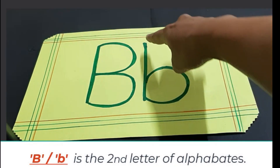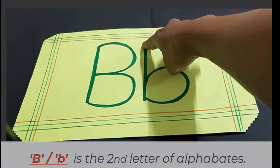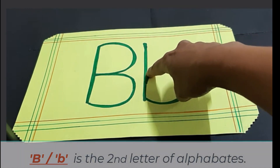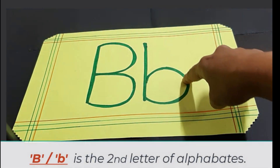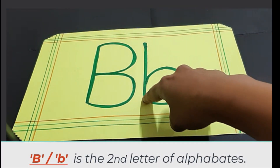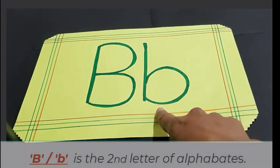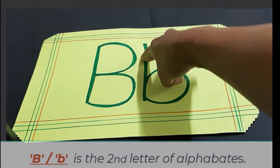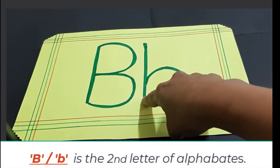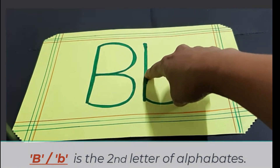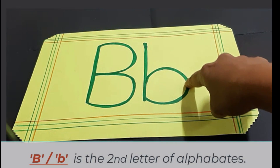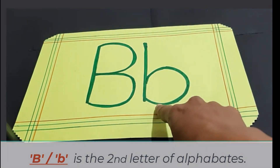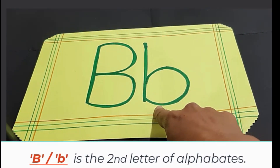Draw a standing line. Go up. Draw a curve. It makes small letter b.